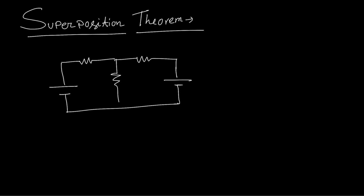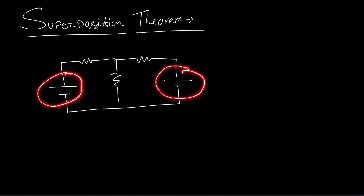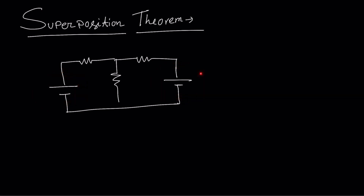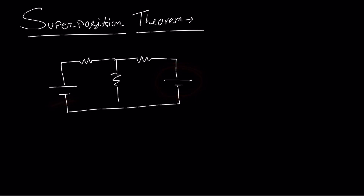That means, suppose if we need to calculate the total current in this resistance, then we need to take one source at a time. At that time, the other source will be turned off. Okay, and then when we consider the second source, the first source will be turned off. I will explain this in the following circuit.